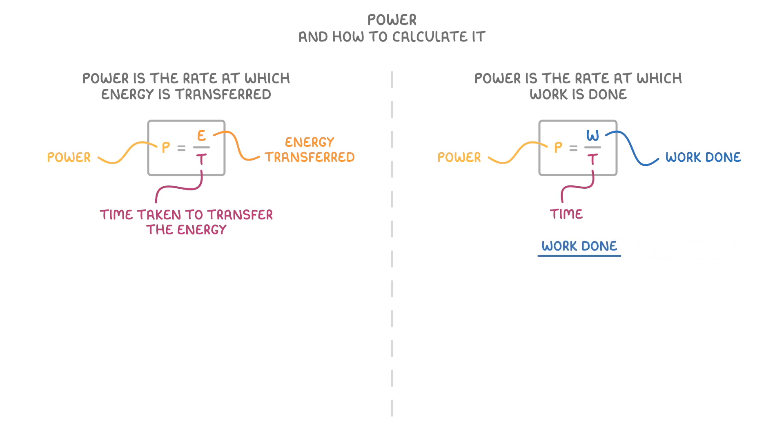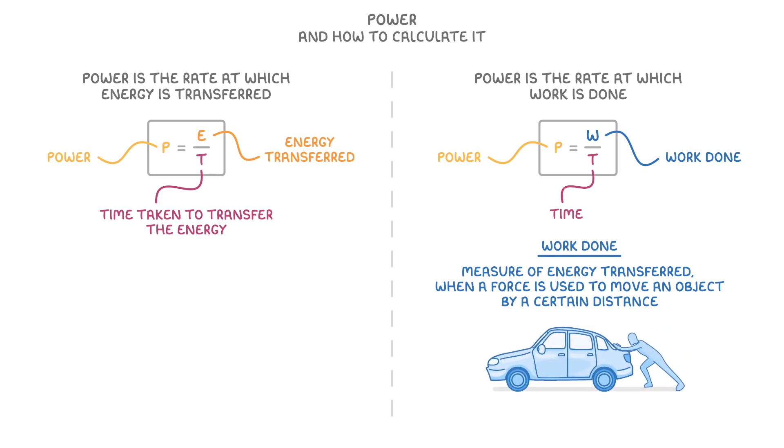Now the term work done can be a bit confusing, but basically it's just a special measure of the energy transferred, and is used when a force is used to move an object by a certain distance. For example, if you pushed a car down the road, then the energy that was required would be referred to as the work done, as you moved it a certain distance.